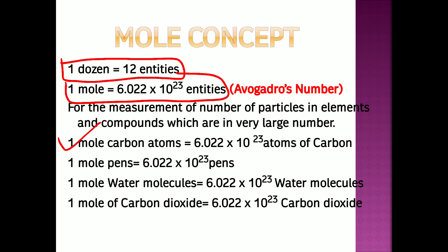For example, one mole of carbon atoms means 6.022 × 10²³ carbon atoms. One mole of pens means 6.022 × 10²³ pens. One mole of water molecules means Avogadro's number of water molecules. This Avogadro number is represented by the symbol Nₐ or N₀. One mole of carbon dioxide means 6.022 × 10²³ molecules of carbon dioxide.